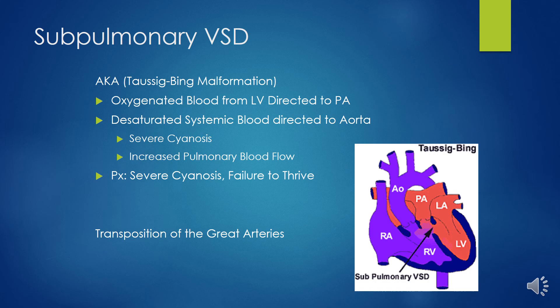In summary for subpulmonary VSD Taussig-Bing: oxygenated blood from the LV is directed to the PA, and desaturated systemic blood is directed to the aorta, causing severe cyanosis.